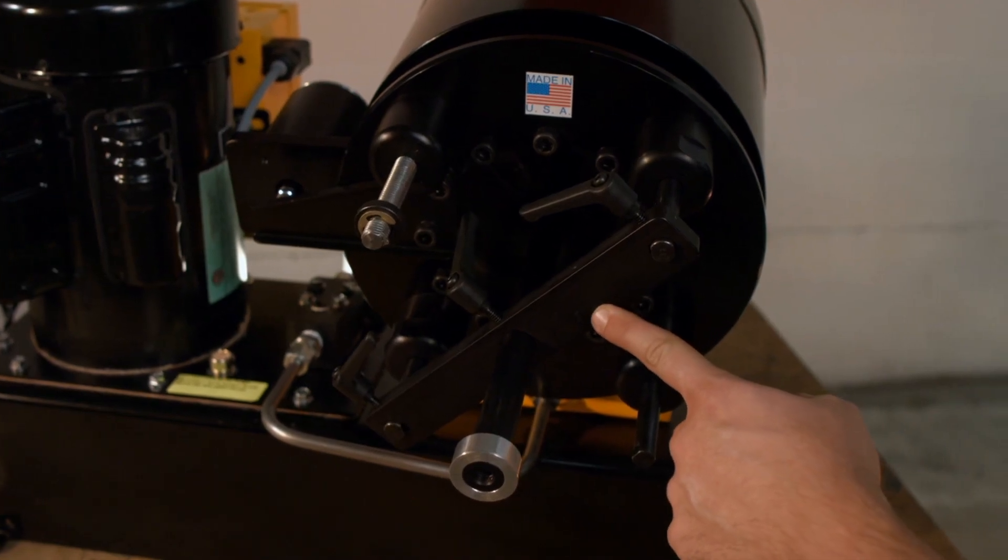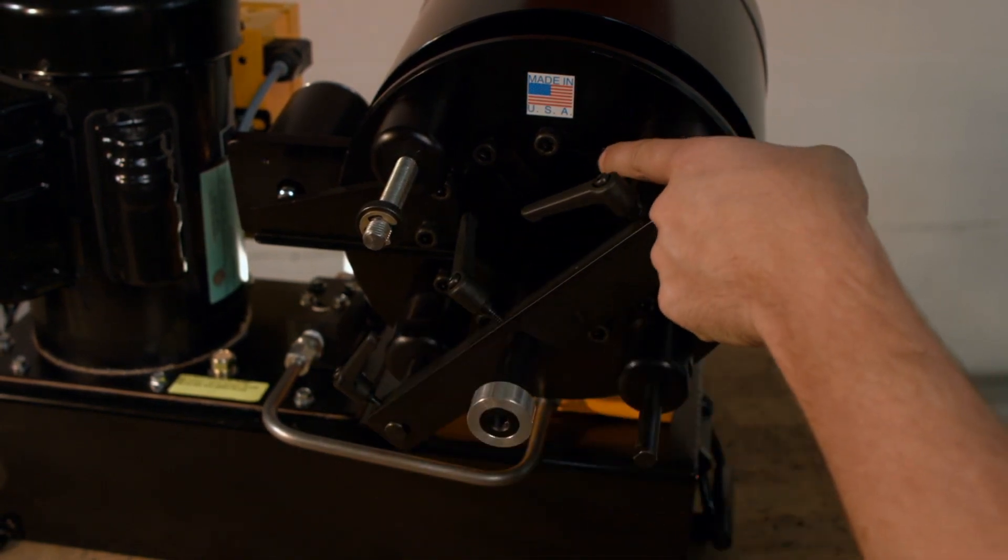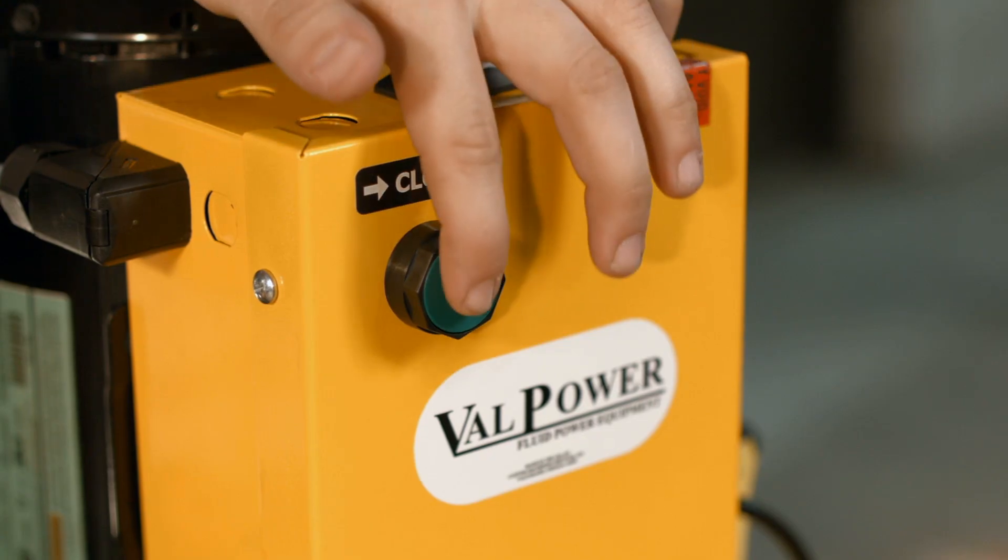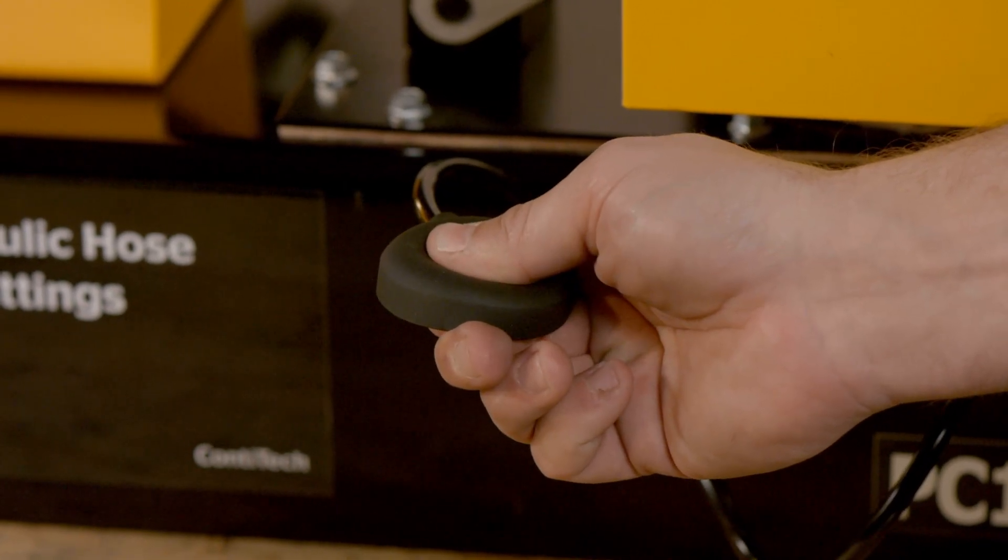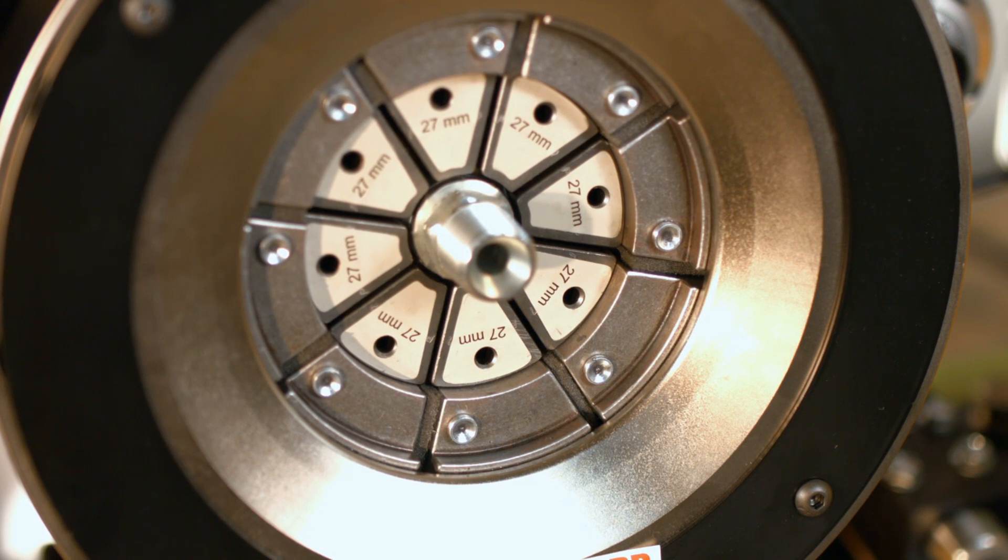The manual retraction stop can be set to limit the amount of crimper retraction. This allows for faster cycle time in between each crimp. Activate the crimp cycle by pressing and holding the green close button or the pneumatic switch. The pump will remain on after the crimp cycle is complete and the die have retracted.